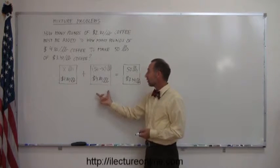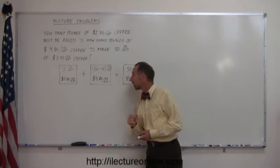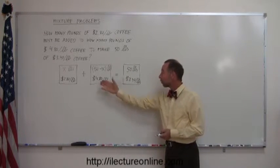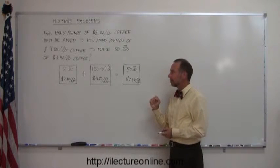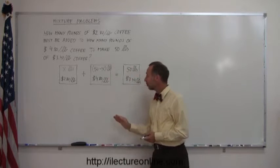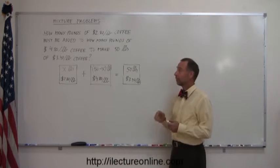If you multiply these two together, you have the total cost of this type of coffee, and if you multiply these two numbers together, you have the total cost of the total mixture put together, which means if you add the cost of this plus the cost of this, you should end up with the cost for this, and that makes sense.